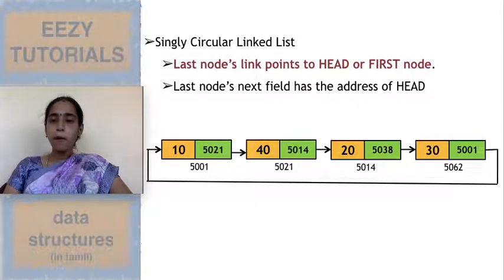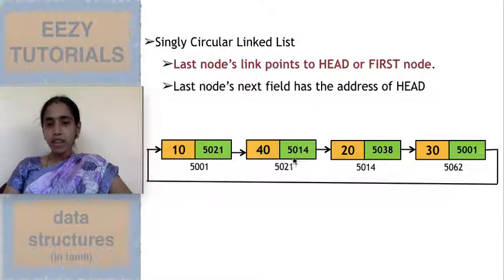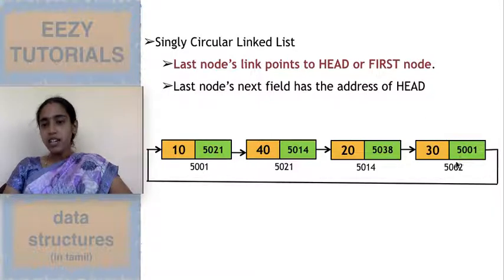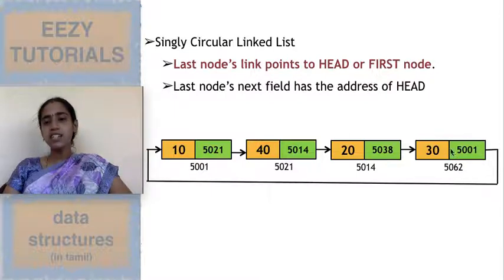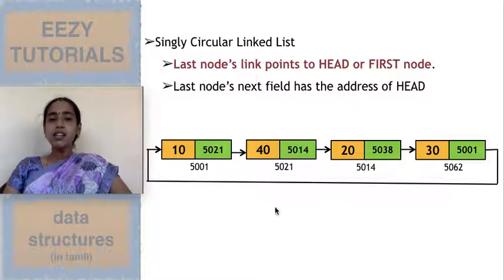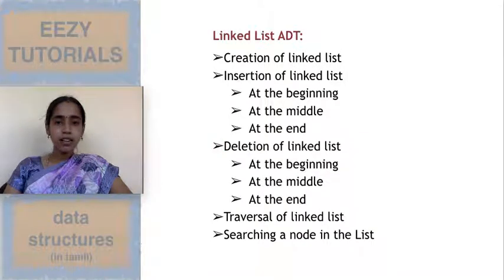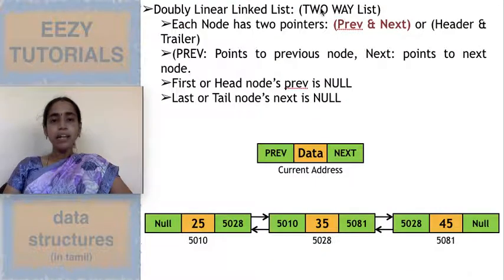The second type is the singly circular linked list. The last node's link points back to the first node. The first node points to the second, second to third, third to fourth, and the fourth — the last node — instead of having null, holds the first node's address (e.g., 5001). So it goes circularly and does not end. This is the singly circular linked list.